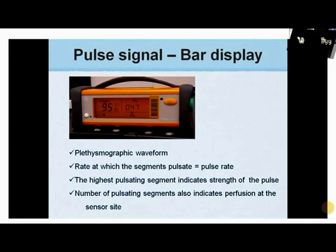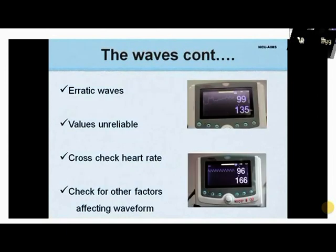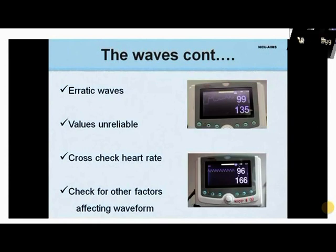If the bar display is less than 50%, it indicates poor quality signals. If the waves are not uniform, the values displayed are likely to be erroneous. A practical approach is to cross-check the heart rate of the baby with the displayed value — they should match within 10% of each other. The causes of non-uniform waves should be corrected before attributing any significance to the displayed values.